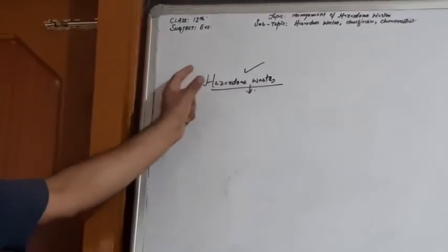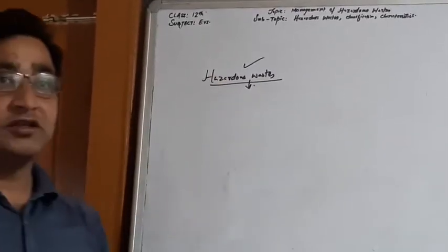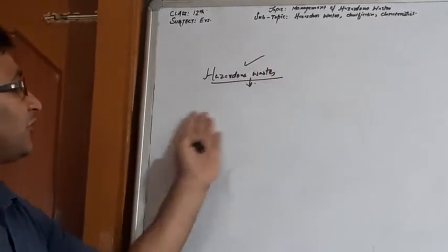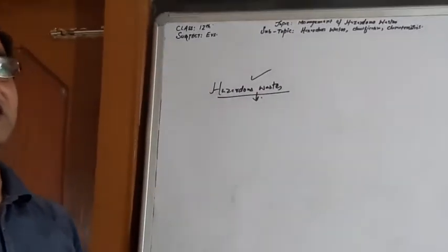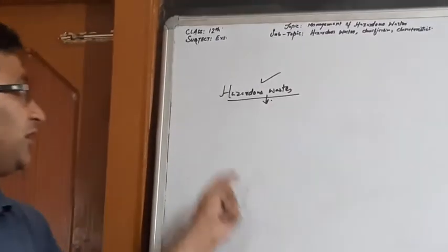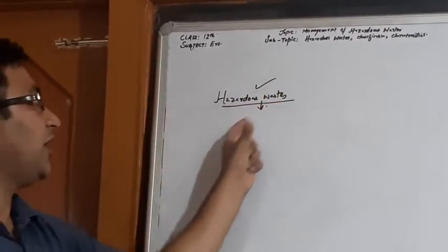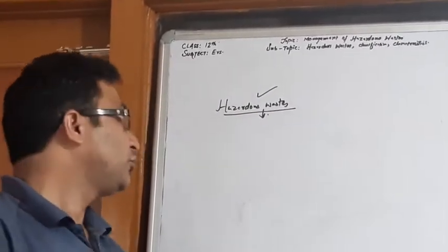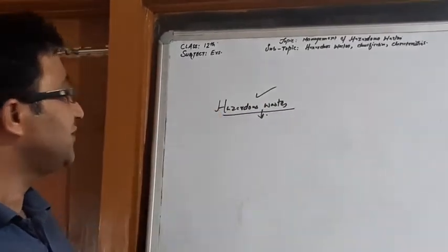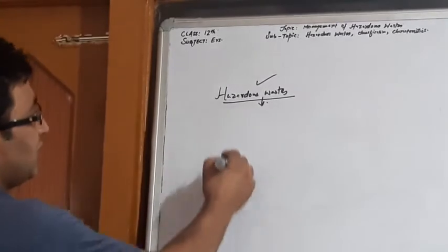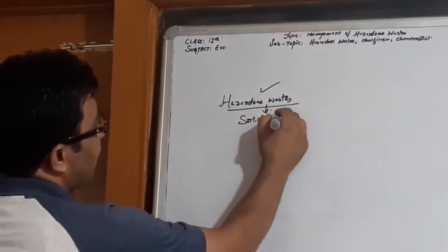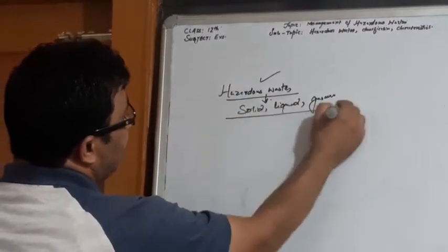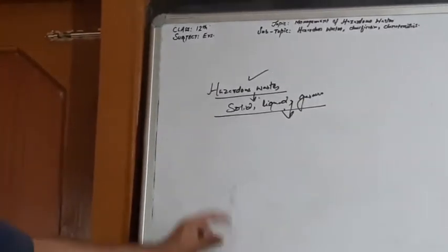So far as these hazardous wastes are concerned, their universe is large and diverse. They are generated from different sources in very bulk quantities and they are of diverse natures. They belong to different categories and apart from these, hazardous wastes can be solid, they can be liquid, or gaseous in form. They can take all states of matter.